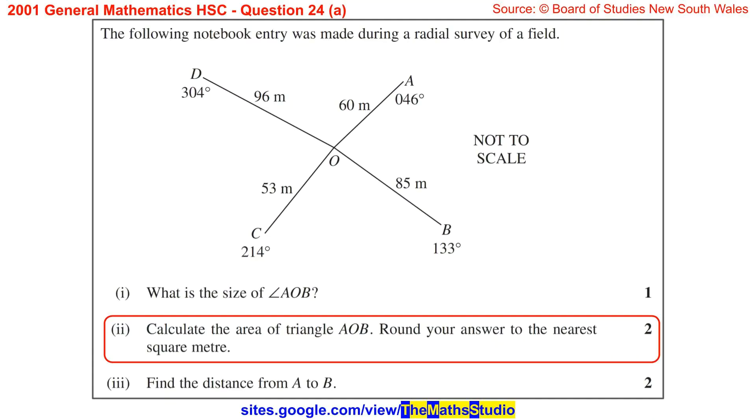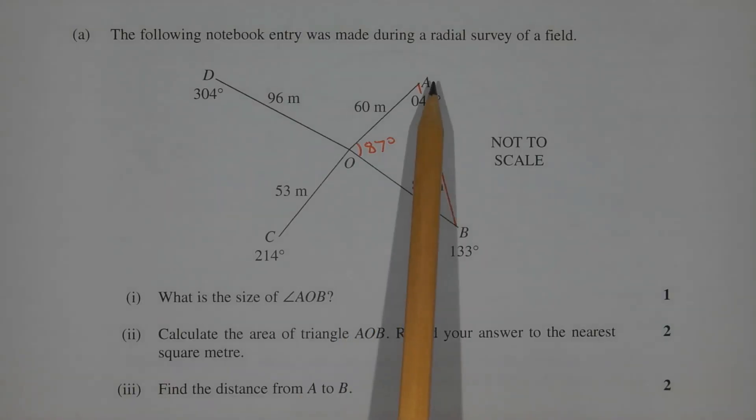Part 2: Calculate the area of triangle AOB. Round your answer to the nearest square metre. In triangle AOB, two sides and the included angle are known.